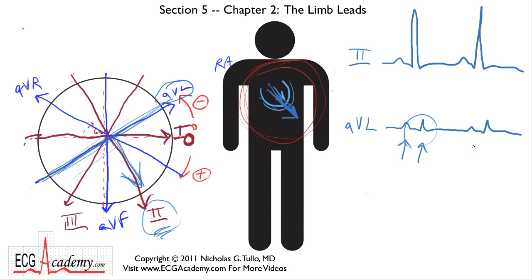The monitor may actually double-count the P-wave and the QRS, or it might not pick up anything at all, and you'll get heart rates of zero. That makes the patient's family really upset when they look up at the monitor and see a heart rate of zero because the monitor is not picking up the QRS complex. Switching to a lead that picks up a larger signal makes a lot of sense in those cases.